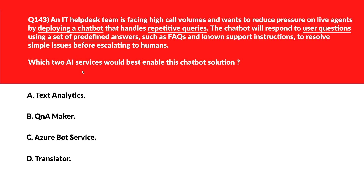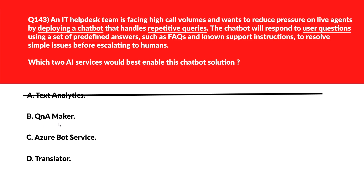Now we need to select two correct AI services. Option A: Text Analytics supports data extraction but doesn't deliver responses based on predefined answers — wrong choice. Option B: QA Maker creates a knowledge base that maps questions to answers for instant query resolution — we'll keep this. Option C: Azure Bot Service enables conversation management for chatbot interactions with users — we'll keep this as well.